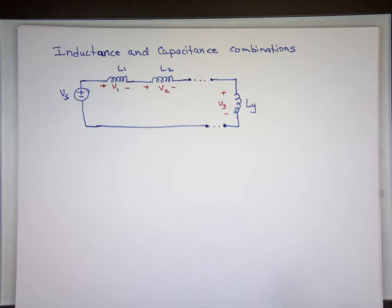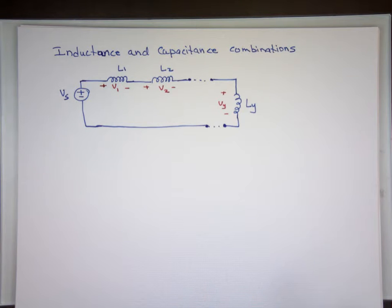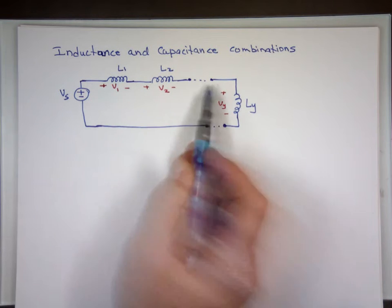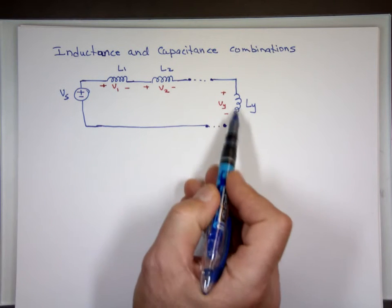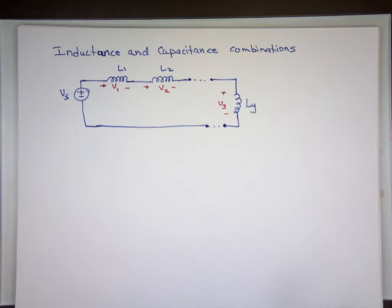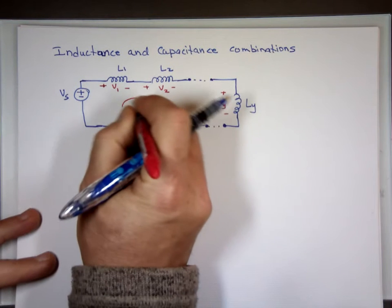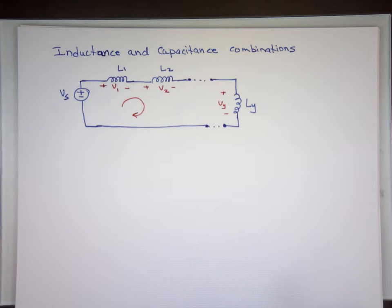The question is, what would you do if you have multiple inductors connected in series? How do you simplify them? So there's a picture of that. I have two inductors here on the top, dot dot dot, that could be more, and one at the end again. So you could have as many as you want. Well, if we do KVL right here, I'm going to derive that equation.